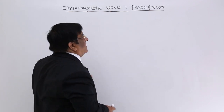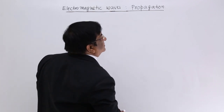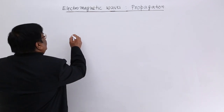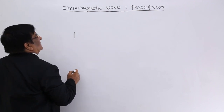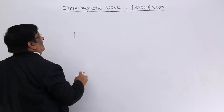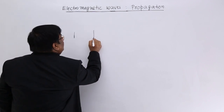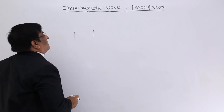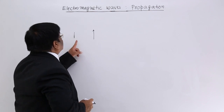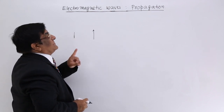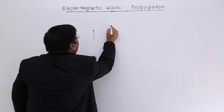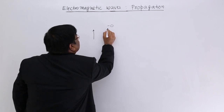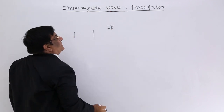So how do they spread out? If there is a charge which accelerates and oscillates here, then it will create a magnetic field. Let's look at its nature. If there is a negative charge and a positive charge, here is the electric field from plus to minus.